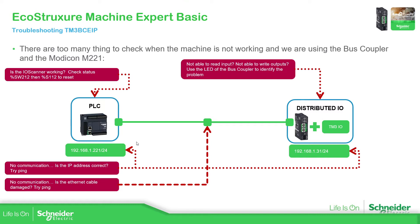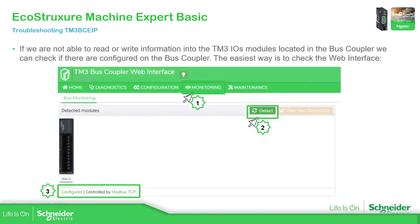The other thing we need to check is that the PLC and the bus coupler are on the same network, otherwise they are not going to talk. Then, if we don't have communication between them and the ping is not responding, you can try a different cable — probably this one is damaged. If you are not able to read any inputs and outputs of the bus coupler, you can use the LEDs in front of the bus coupler to identify what the problem is.